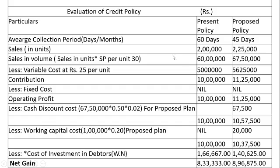Next, deduct the variable cost of Rs. 25 per unit. For the present policy: 2,00,000 × 25 = Rs. 50 lakh. For the proposed: 2,25,000 × 25 = Rs. 56,25,000. Sales less variable cost gives contribution — Rs. 10 lakh and Rs. 11,25,000 respectively. Fixed cost is not given in this problem, so write nil. The resulting operating profit is Rs. 10 lakh for the present and Rs. 11,25,000 for the proposed policy.